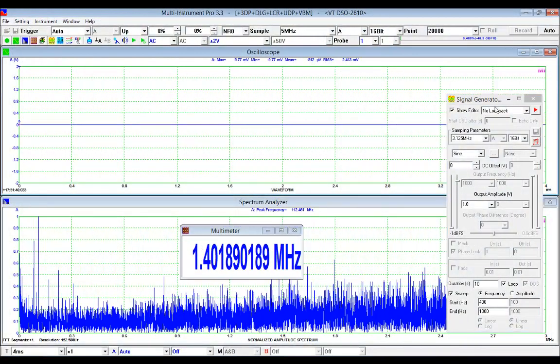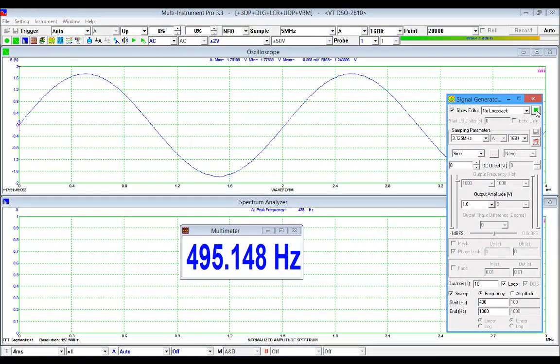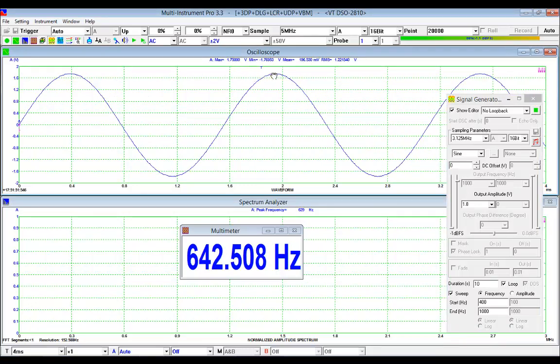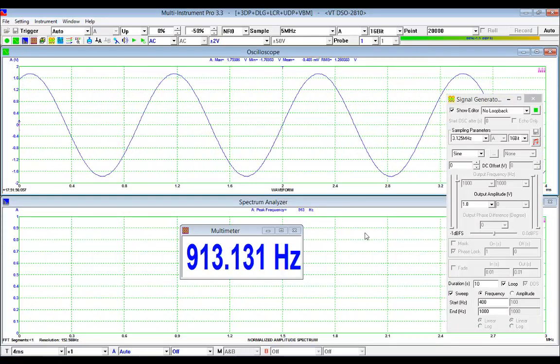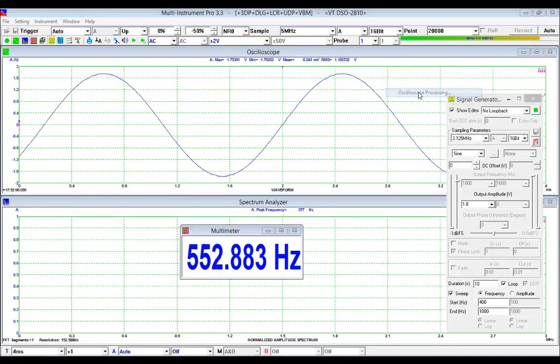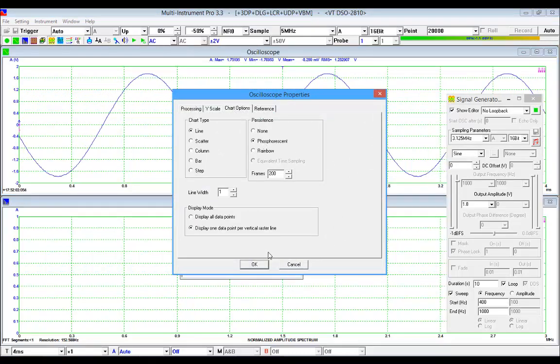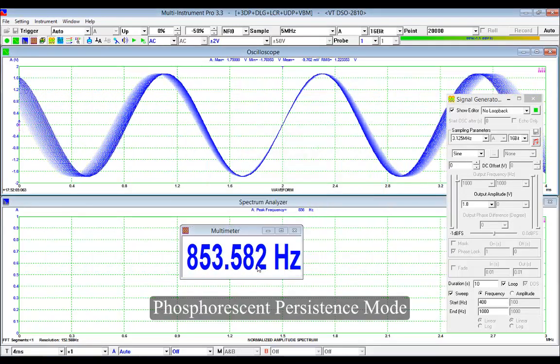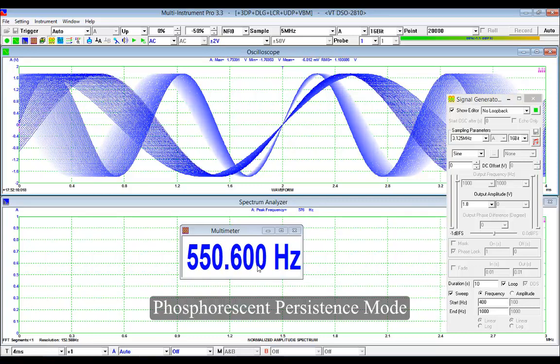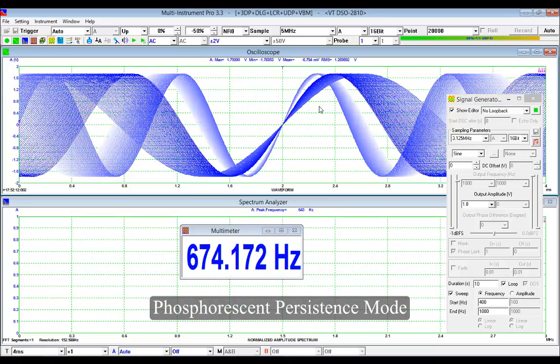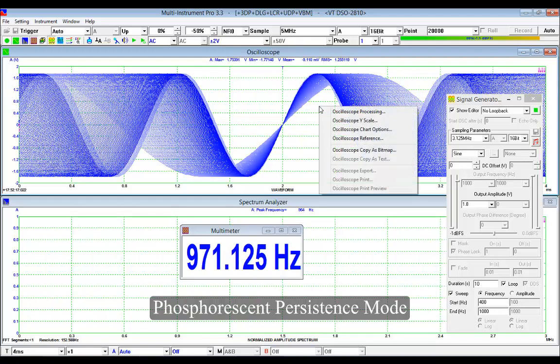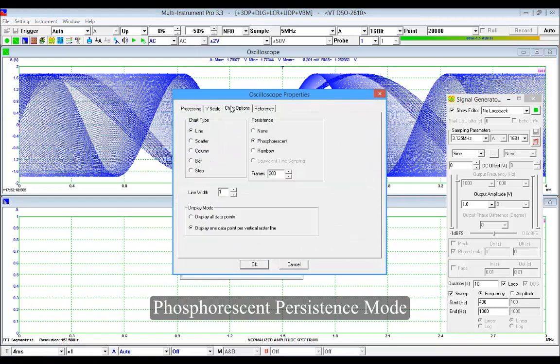Here we generate a frequency sweep signal from the signal generator of a VT DSO 2810. Let's put the trigger delay to minus 50 percent. Right-click anywhere inside the oscilloscope and open its properties window. Select the chart options tab and choose phosphorescent. Now the oscilloscope is in the phosphorescent display mode.